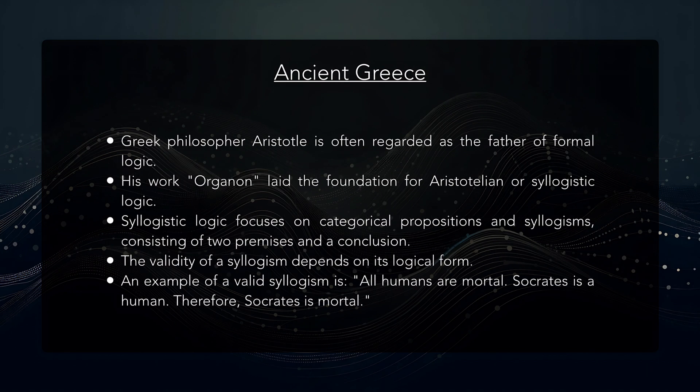The ancient Greek philosopher Aristotle is often regarded as the father of formal logic. His work, the Organon, laid the foundation for what is now known as Aristotelian or syllogistic logic. Aristotle's syllogistic logic focuses on categorical propositions and syllogisms, where syllogisms are logical arguments composed of three statements — two premises and a conclusion. The validity of the syllogism depends on its logical form. An example of a syllogism is: all humans are mortal; Socrates is a human; therefore Socrates is mortal. This argument is valid because its form adheres to the rules of syllogistic logic.